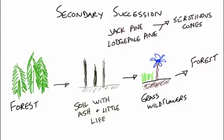Secondary succession is when we've already got an ecosystem established with lots of different organisms. Taking a forest as an example: a forest fire occurs, the trees all burn and leave some tree stumps behind. There's lots of ash in the soil. The first organisms to come back are grasses, flowers, and weeds. They continue to grow, enrich the soil, and eventually we get our forest back.